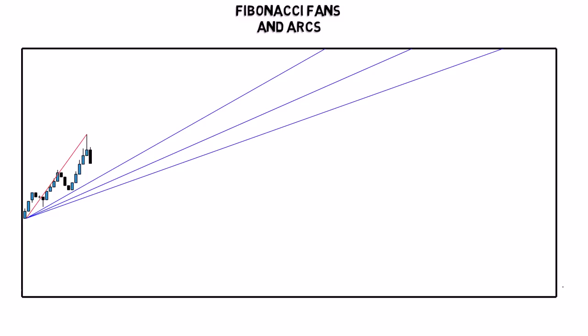Fibonacci fans and arcs are two tools that use Fibonacci ratios to find potential support and resistance levels. Just like other Fibonacci tools, fans are drawn from the swing low to the swing high. The 38.2, 50, and 61.8% retracement trendlines are then placed on your chart and can be used to find support and resistance areas.